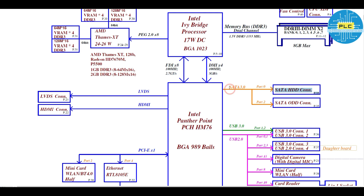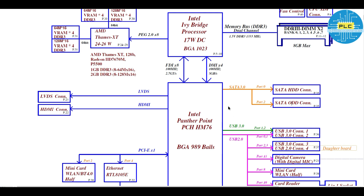Today we will discuss about HDD. This is the PCH and this is the HDD — the communication happens between these two through SATA 3.0. Here port 0 has HDD and port 2 has ODD. Now, what is SATA?